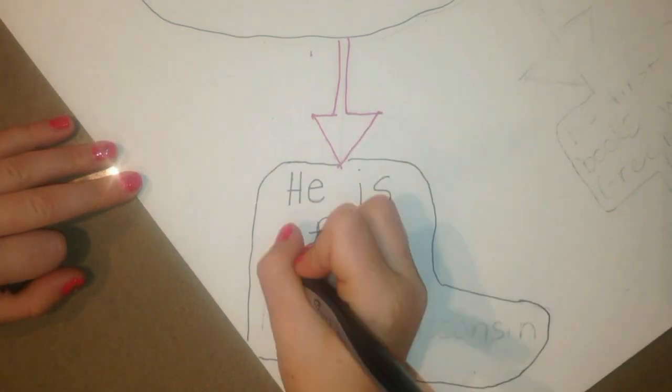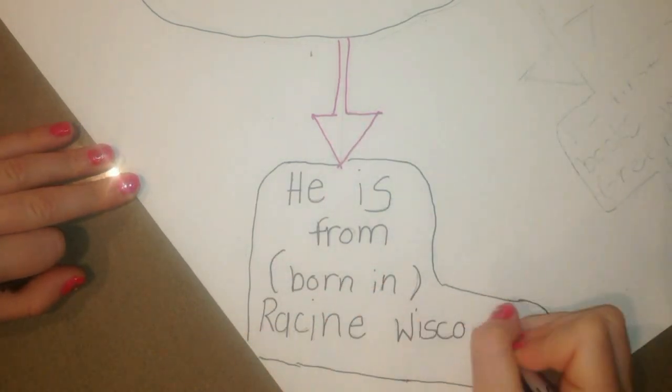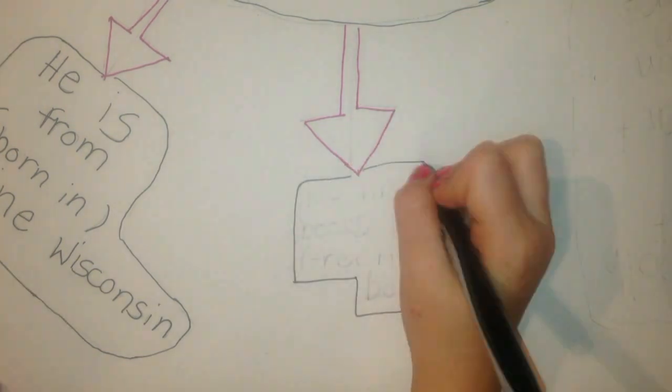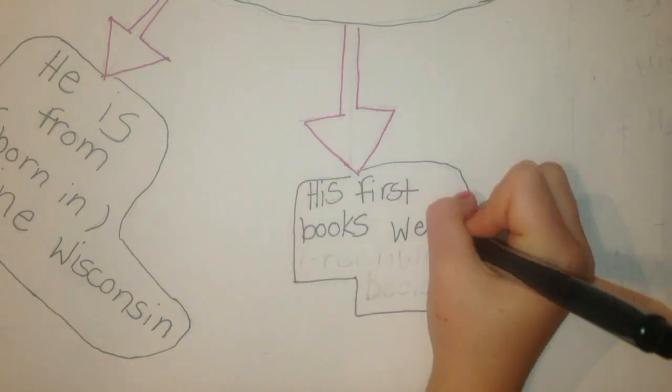Kevin Hinkes is from Racine, Wisconsin. His first books were Green Willow books.